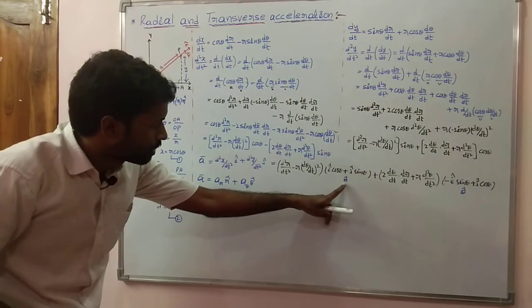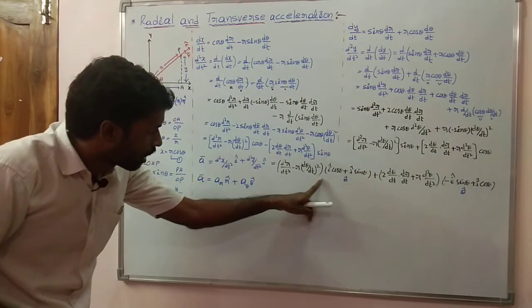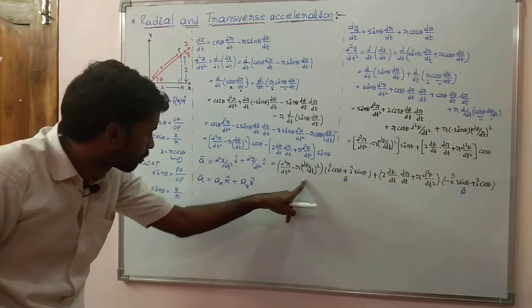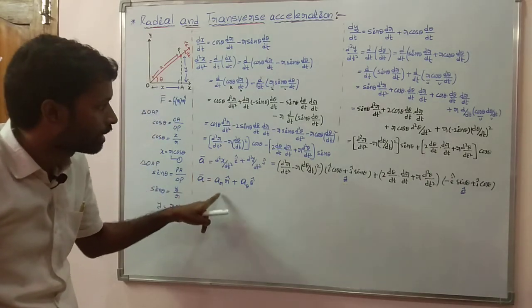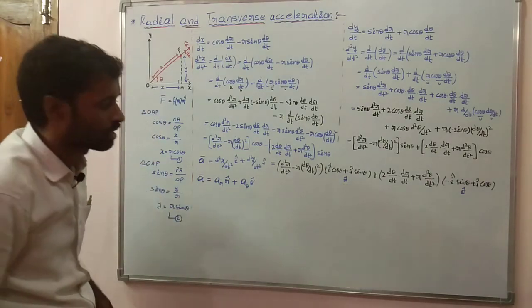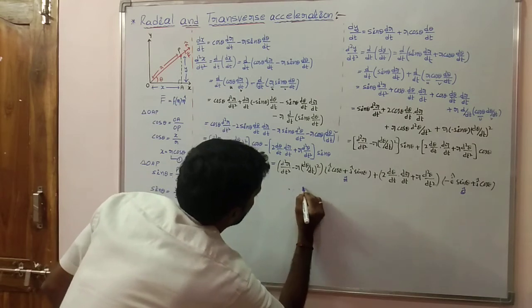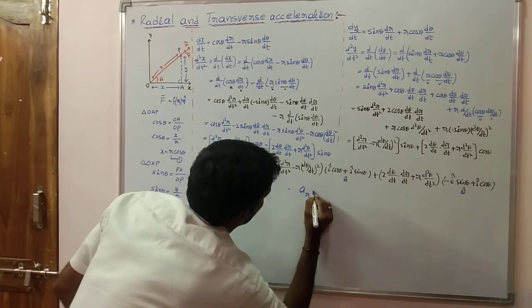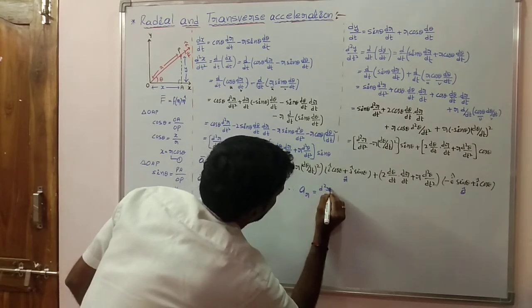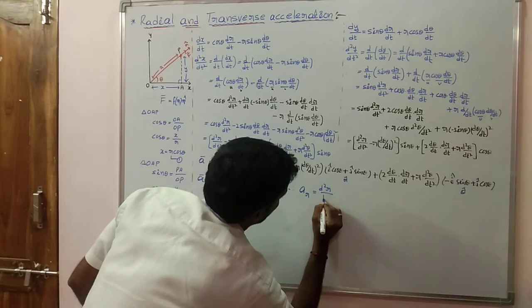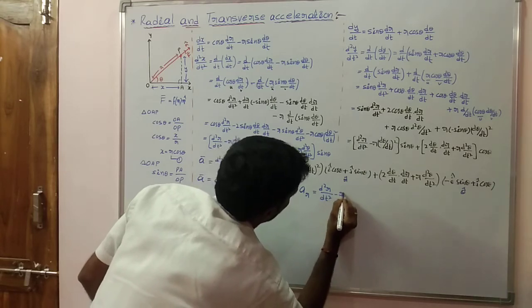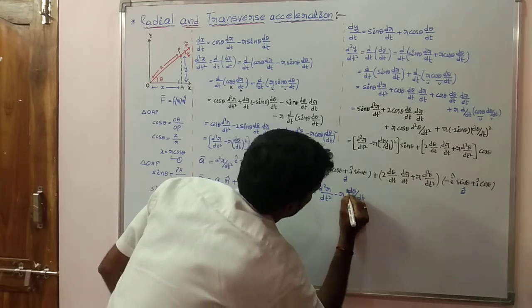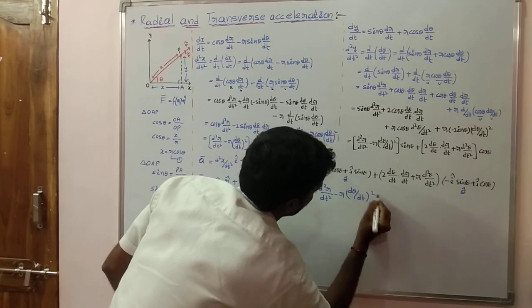The coefficient of r̂ represents radial acceleration. Therefore, radial acceleration a_r is equal to d²r/dt² minus r into (d theta/dt)².